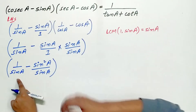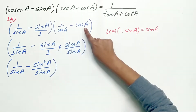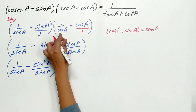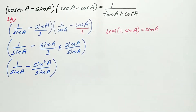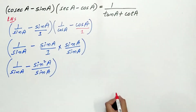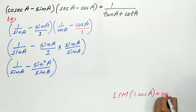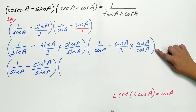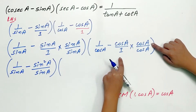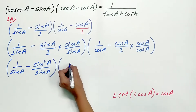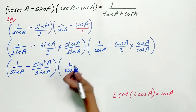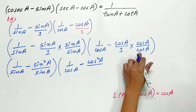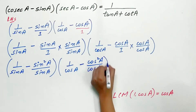Now I can easily subtract to get (1 - sin²A) by sin A. Now look at the other expression: 1 by cos A minus cos A. Again the denominators are different, so take the LCM of cos A and 1, which is cos A. Multiply and divide — cos A times cos A is cos squared A, and 1 times cos A is cos A.